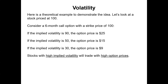Here's a theoretical example to demonstrate the idea. Let's look at a stock with a price of 100. If we consider a six-month call option with a strike price of 100 — an at-the-money call option — if the implied volatility is 90, the option price might be say $25. If implied volatility is 50, the option price might be about $15. And if the implied volatility is only 30, the option price might be about $9. You can see that with the same six-month call option at a strike of 100 and the stock at 100, different levels of implied volatility can make a big difference in the value of that option.